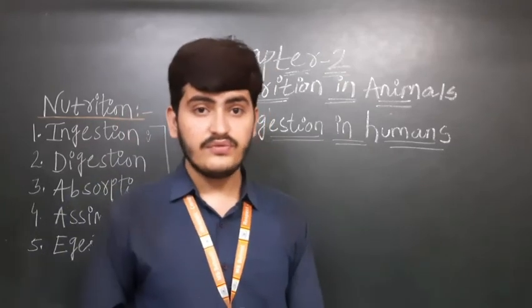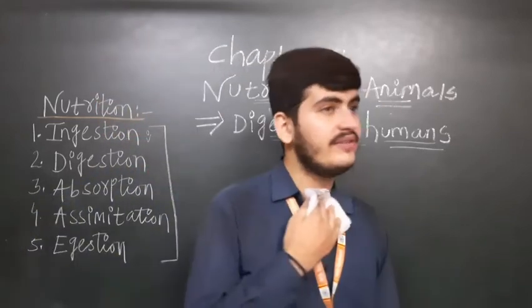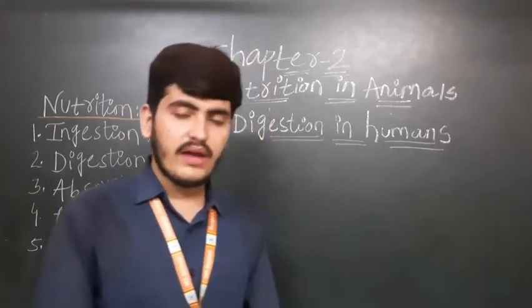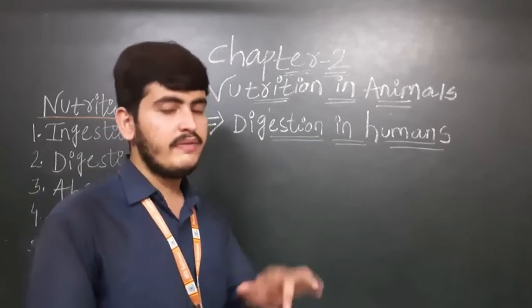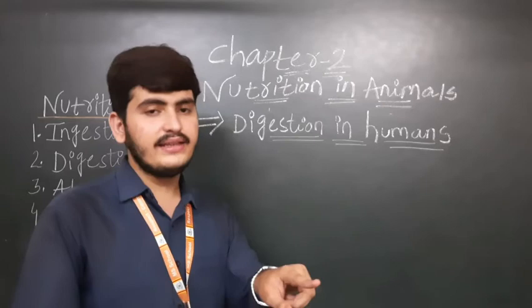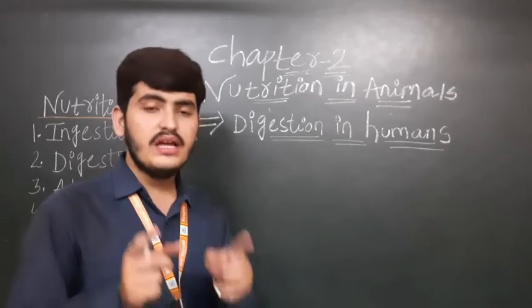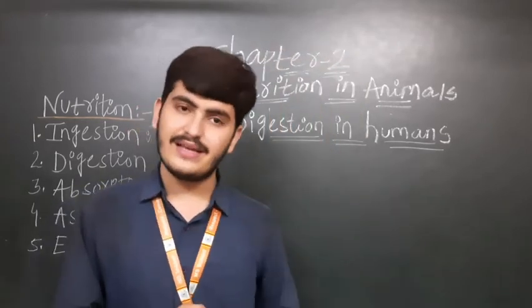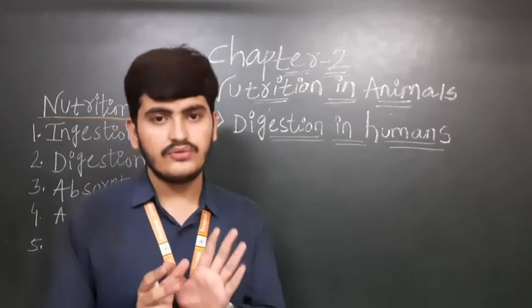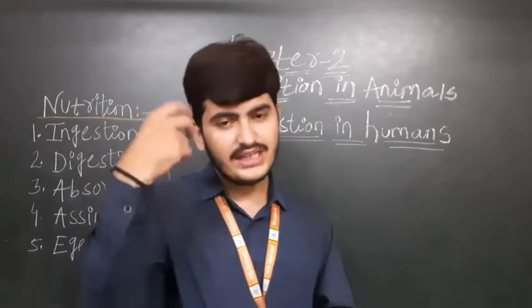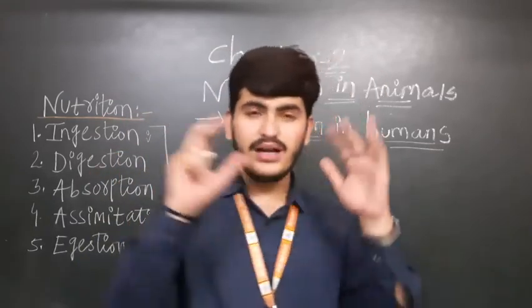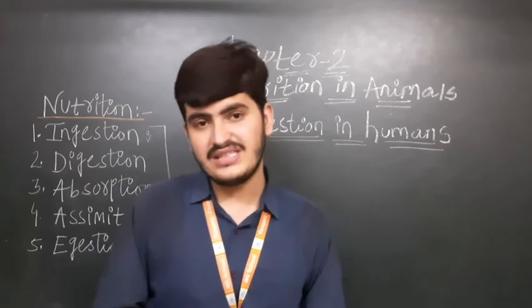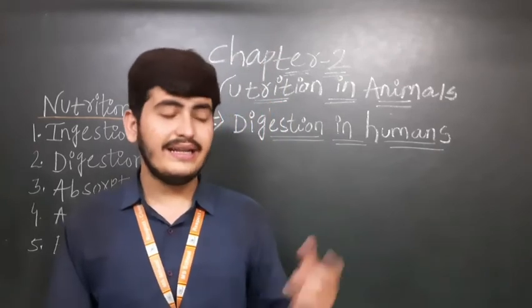Digestion is necessary because we get nutrients from digested food, and only then are we able to do any type of work. Some part of the food is digested and some part is undigested. The undigested food comes out of the body. This whole process is a very long path — six organs are included in the digestion process.